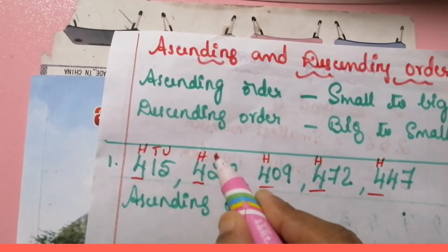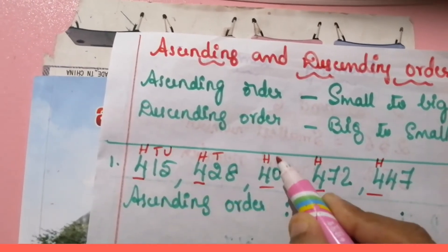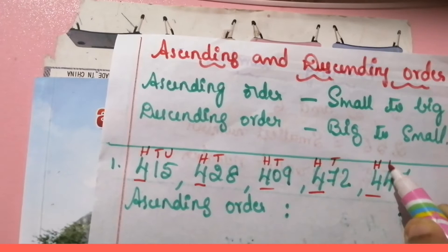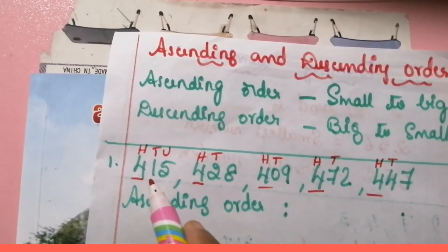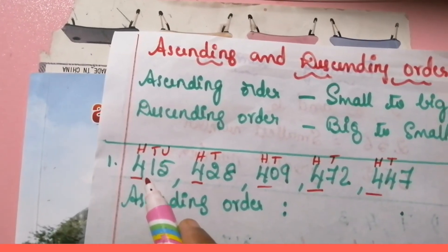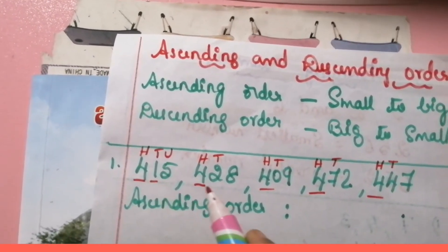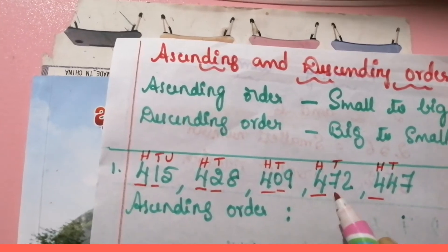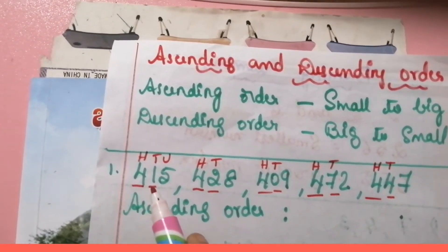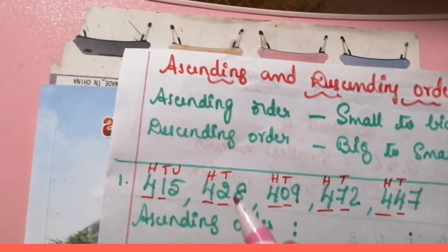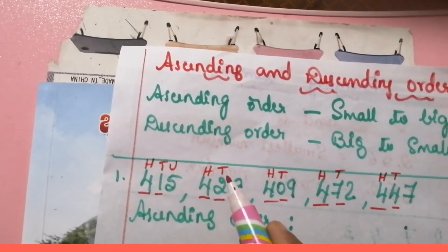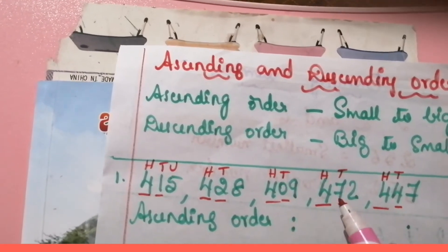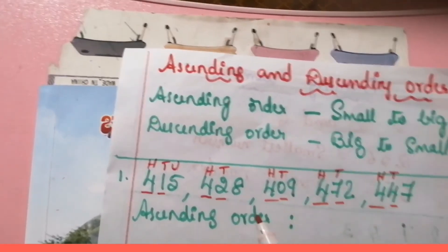Now let us compare the numbers in the tens place: one, two, three, four, five. Here we have one ten, two tens, zero tens, seven tens, and four tens.